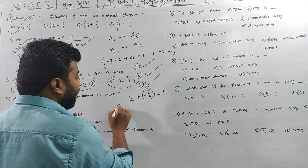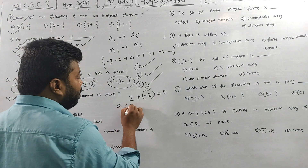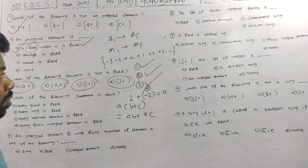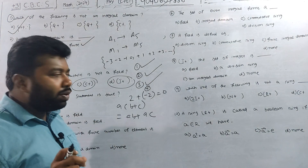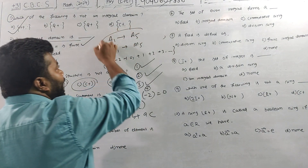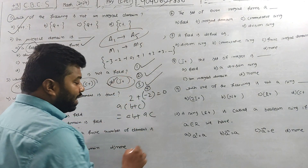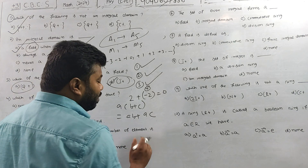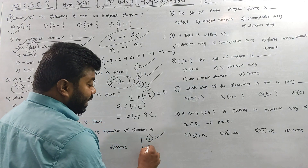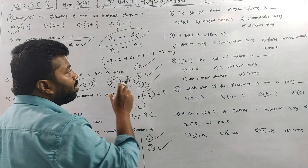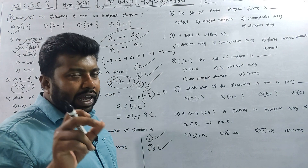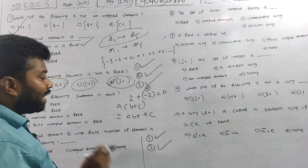The distributive property is also satisfied: a into (b + c) equals a·b + a·c, both left and right distributive laws hold. The additional six properties for integers are satisfied. For multiplication, closure is satisfied, associative property is satisfied, and commutativity a·b = b·a is also satisfied.